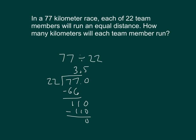So, how many kilometers will each team member run? They'll run 3 and 5 tenths kilometers. Is this answer reasonable? I think so. If we were to express this within meters, it would be 3 kilometers and 500 meters for each of the team members.